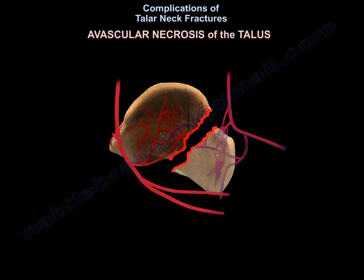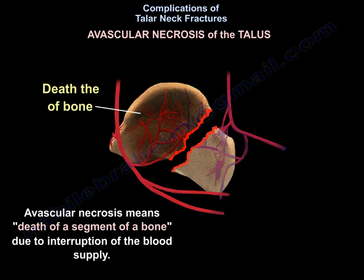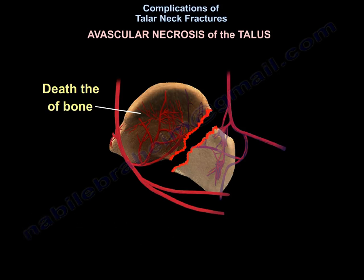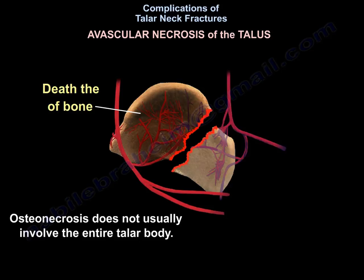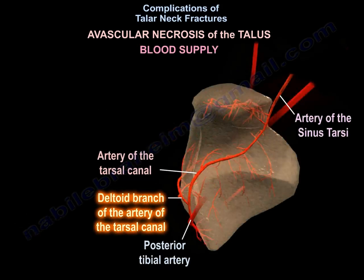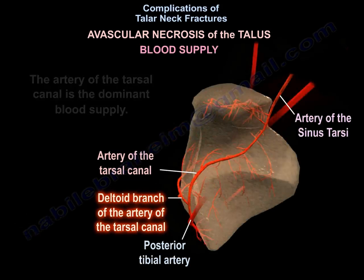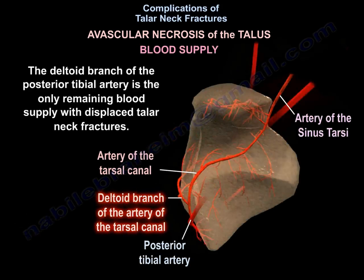Avascular Necrosis of the Talus means death of a segment of bone due to interruption of the blood supply. In Talus Neck Fractures, there will be death of the body of the talus. Osteonecrosis does not usually involve the entire talus body. The artery of the tarsal canal is the dominant blood supply, while the deltoid branch of the posterior tibial artery is the only remaining blood supply with displaced Talus Neck Fractures.